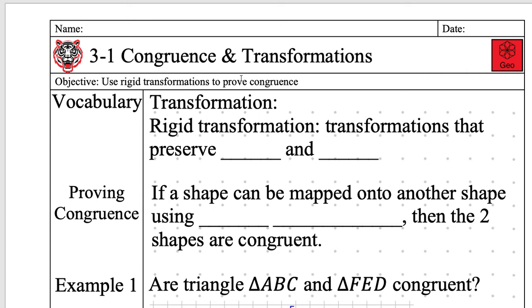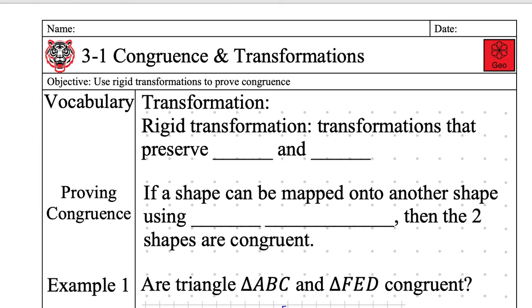All right, so we are in geometry. Today's date is Tuesday, December 3rd, 12-3, 2019. That's the wrong date. There it is.